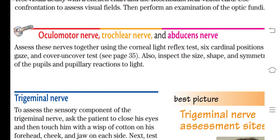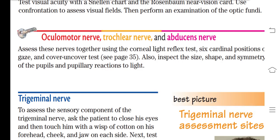Inspect the size, shape, and symmetry of the pupils and their reaction to light. You need to check both eyes — are they the same shape and equal? Shine a light: the pupils should constrict. When you remove the light, both pupils should dilate. This assesses the oculomotor, trochlear, and abducent nerves.